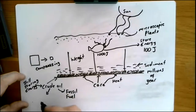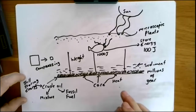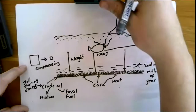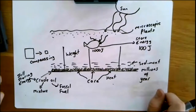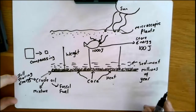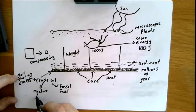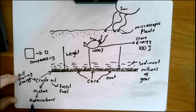Crude oil is what we call a mixture. From junior start you should know what a mixture is — a mixture is where you have two or more substances that are mixed or jumbled together but are not chemically combined. Crude oil is a mixture of compounds called hydrocarbons, and we're going to see more about these hydrocarbons later.